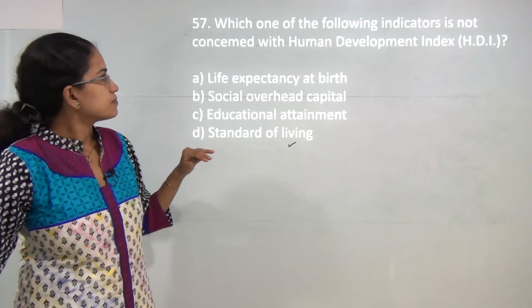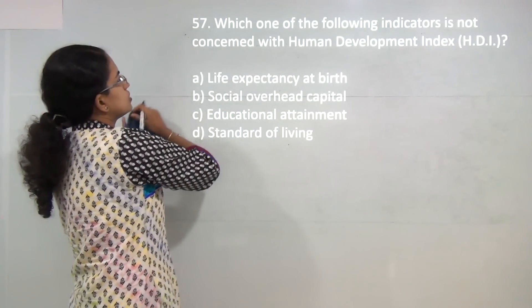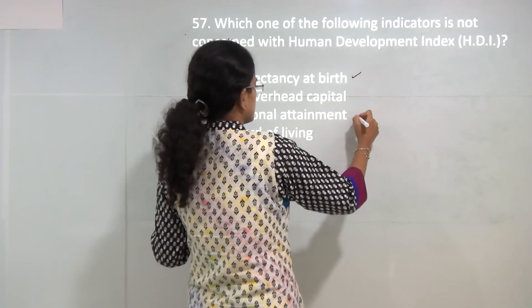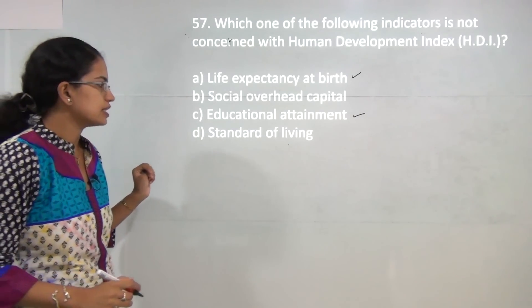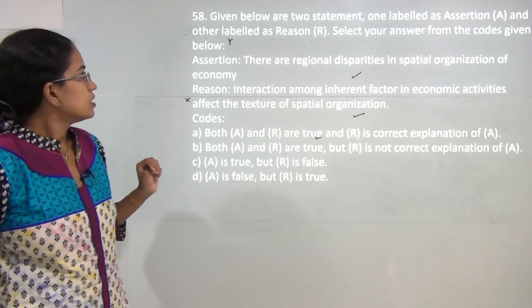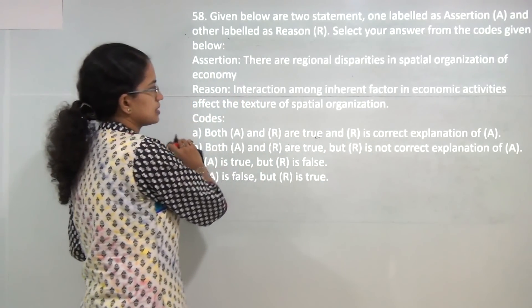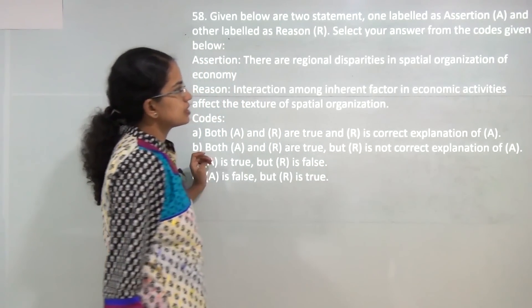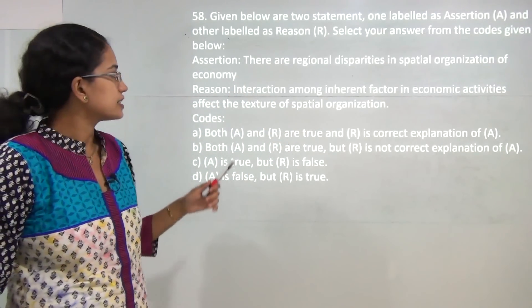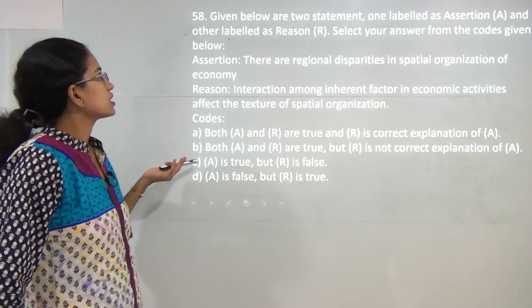Which indicator is not concerned with Human Development Index (HDI)? When we talk about HDI, you have three indicators: life expectancy at birth, educational attainment or educational index, and standard of living. The only incorrect answer here is B. Next, there are regional disparities in spatial organization of economy - that's correct. And interaction among inherent factors in economic activities affect the texture of spatial organization. Both assertion and reason are correct, and reason explains the assertion directly.